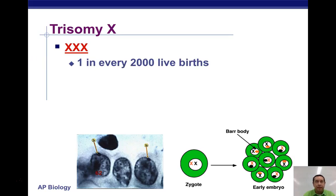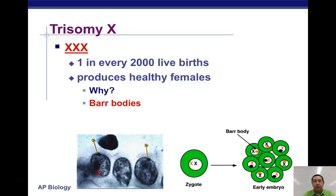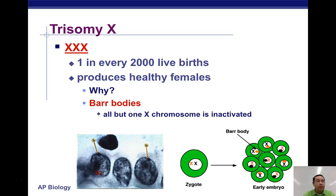Trisomy X occurs in one in every 2,000 births and results in healthy females. Normally women's cells have two X chromosomes and one of them in every cell gets inactivated, forming Barr bodies. In the case of trisomy X, all of the extra X chromosomes except for one get inactivated, so you get the normal dose of all the proteins and everything is fine.